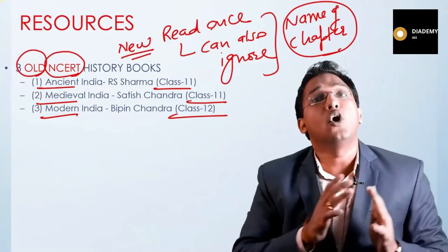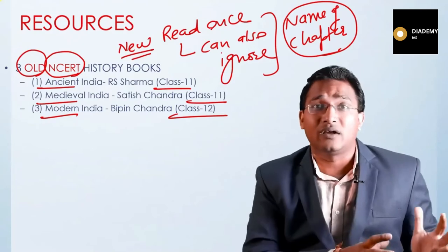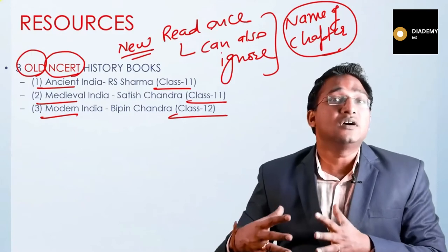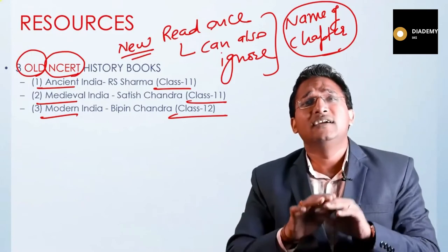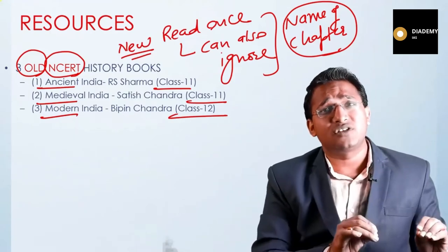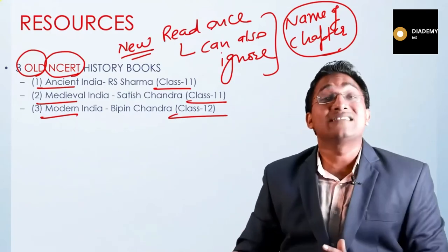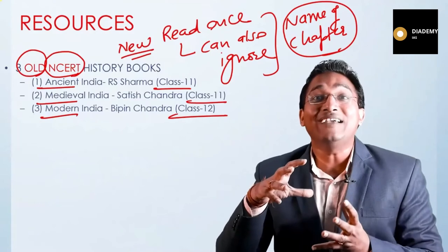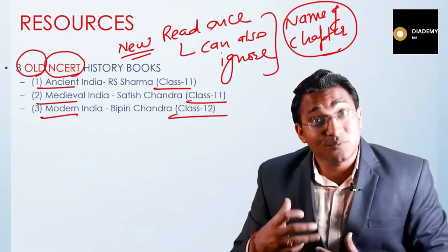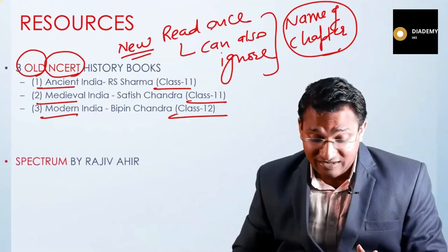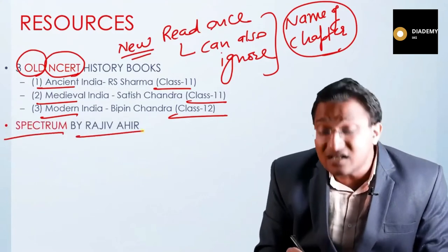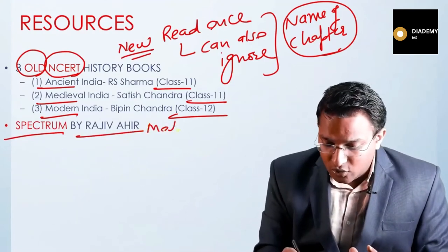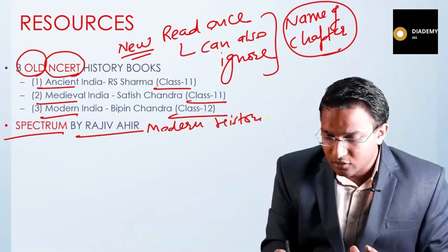You can go for synopses or crux material only after reading the NCERTs, because going directly to the crux will cause you to miss interlinkages and the story part. History — whether ancient, medieval, or modern — can be read as a story, which makes it very interesting. For modern history, Spectrum by Rajiv Ahir is the golden book. A large number of questions come from this source, making it a must-read for modern history.